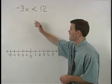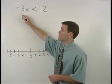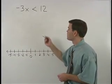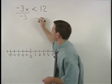In this problem, since x is being multiplied by negative 3 on the left side of the inequality, to get x by itself, we divide both sides by negative 3.